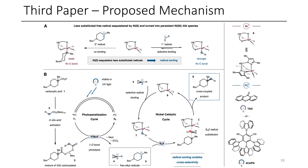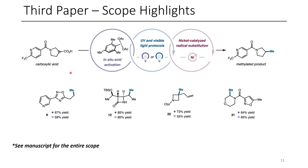In this case, they were able to use thioxanthone — similar to another paper mentioned today — or alternatively 4CZ-IPN, which is another metal-free photocatalyst. The scope of this paper was really good, and I'd encourage you to check out the full paper. In these examples, you can see that the acetate groups on the iodine(III) reagent end up providing a methyl group — because they're acetates, the CH3 group is the part that transfers.